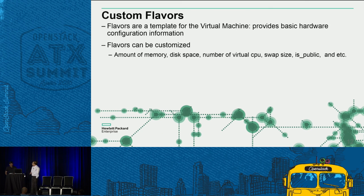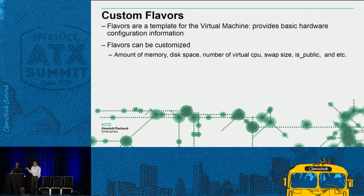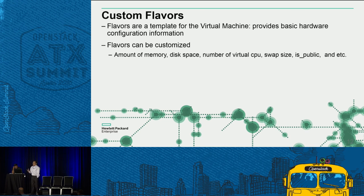Another important concept is flavors, where you define how much memory, disk space, and number of CPUs to use. When you create an instance, you specify the flavor. For example, a flavor name might be 'small', 'medium', or 'high'. The command would look like: trove create my-instance with the flavor equal to 'small'.